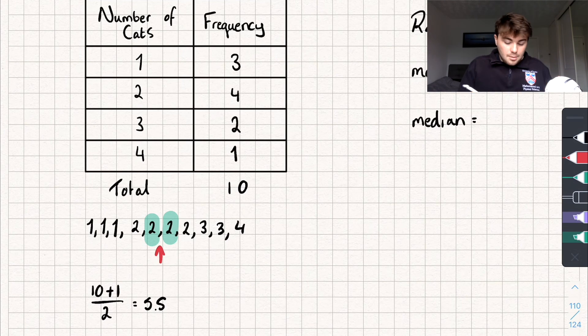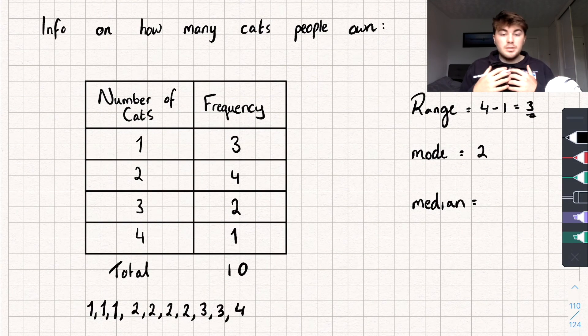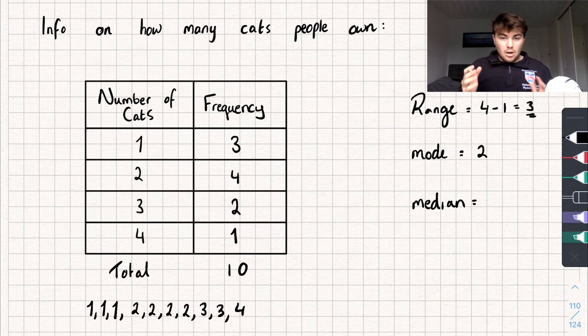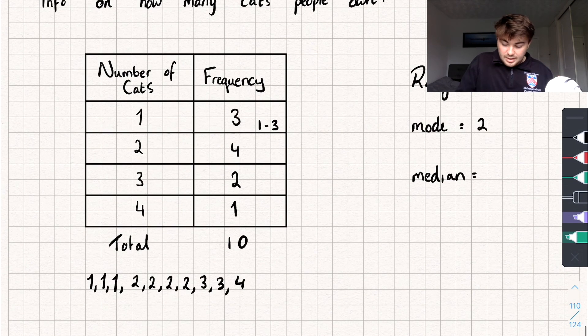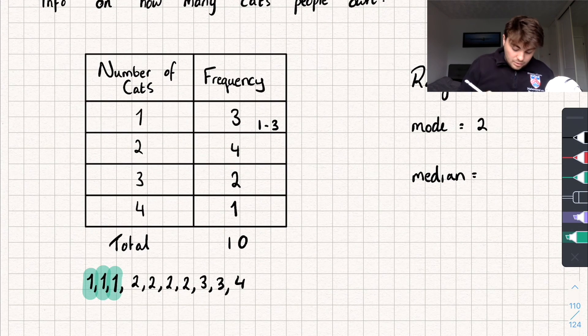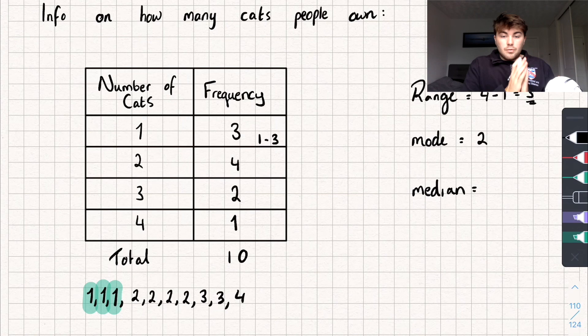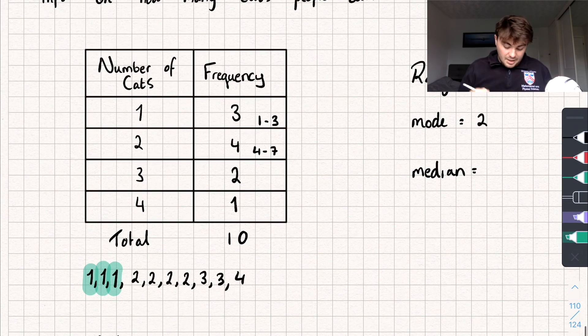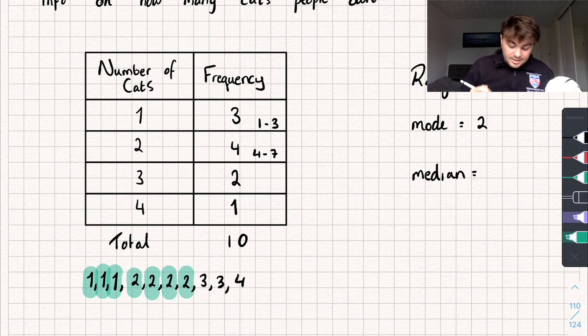But how can we find this using the table? Let's have a look at our table. You can see the frequency of ones is 3 which means the first three numbers are in that row. So we've got the numbers 1 to 3 in that row. They're all ones. And you can see that on our list of data here, 1, 2, 3. The next row is number of cats being 2, and the frequency of that is 4. So the numbers from 4 to 7, so 4 to 7 are all going to be twos. And if we look at our list of data where we've got the 4th number, 5th, 6th and 7th number like that.